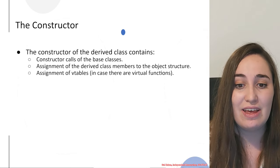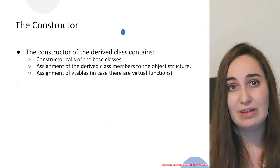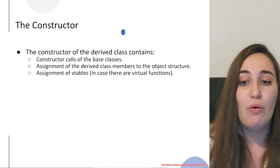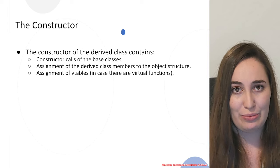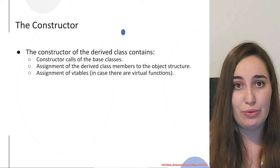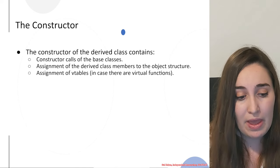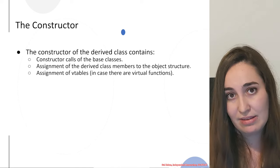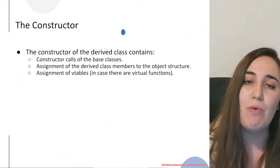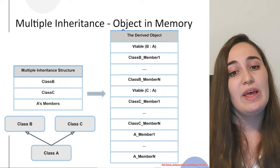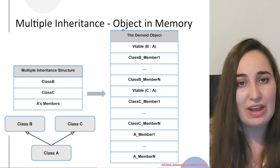Another thing you would see is that member assignments are quite similar — you still have the same behavior when storing members inside the object's structure and memory, but the order of members will be a little different than what you might assume. Also important to understand is that when you have multiple inheritance, in many cases you would have more than one V table, meaning if virtual functions are defined or inherited, there will be more than one V table in the object structure.